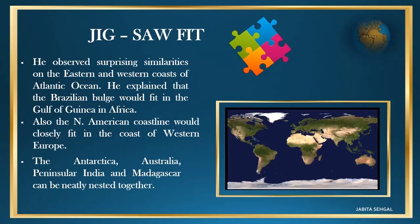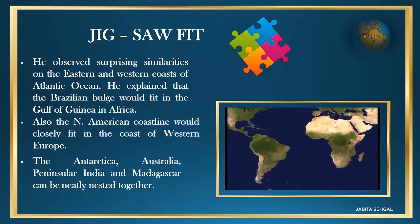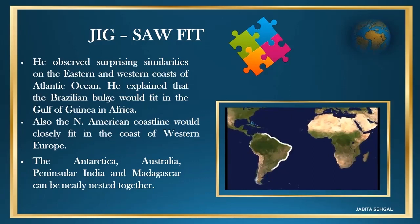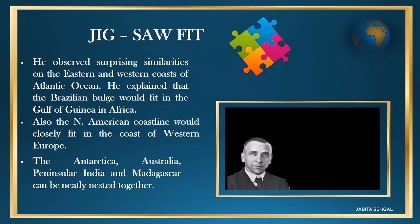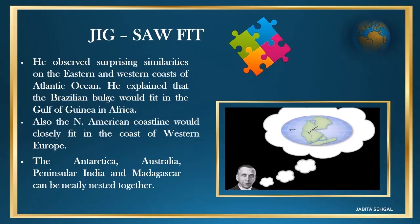Wegener observed surprising similarities on the eastern and western coasts of the Atlantic Ocean. He explained that the Brazilian bulge would fit in the Gulf of Guinea in Africa. Also, the North American coastline would closely fit the coast of Western Europe. The Antarctica, Australia, Peninsular India, and Madagascar can be neatly nested together.